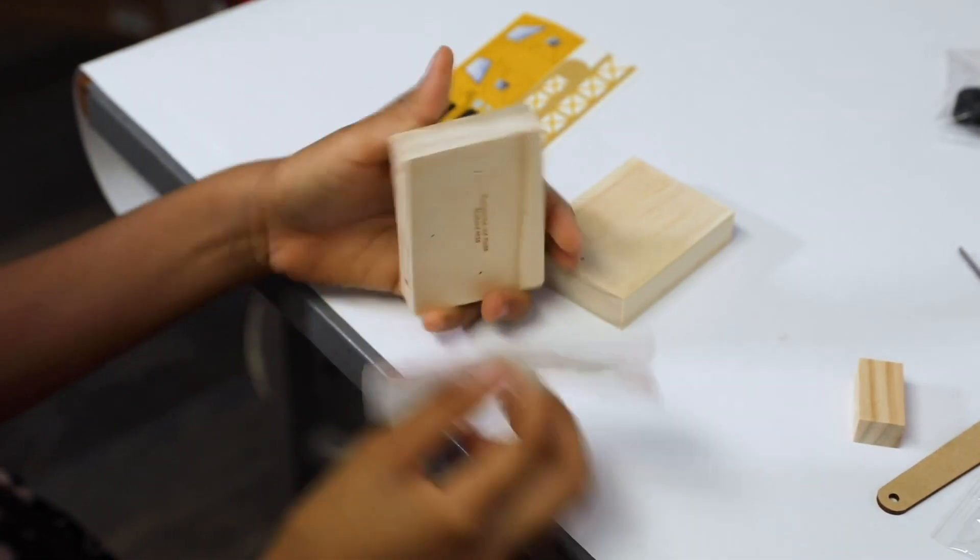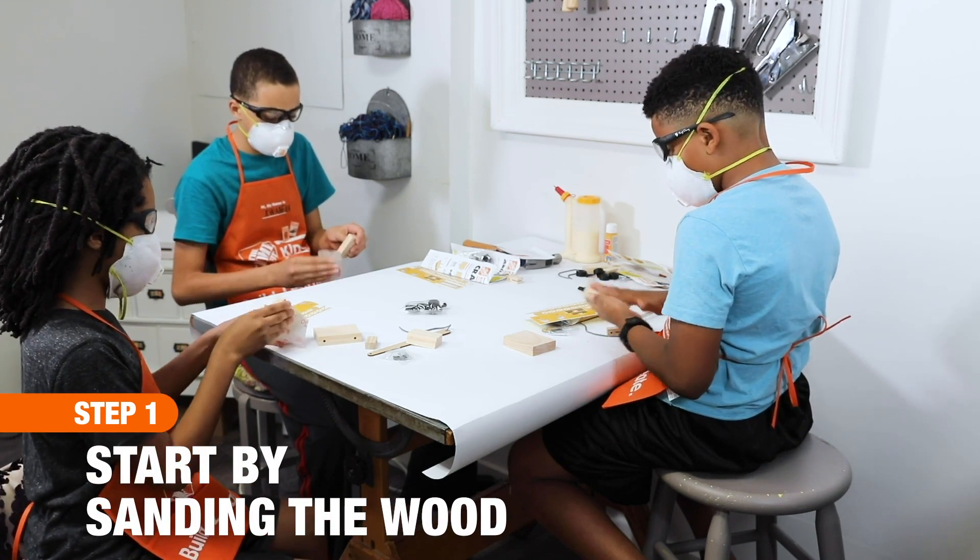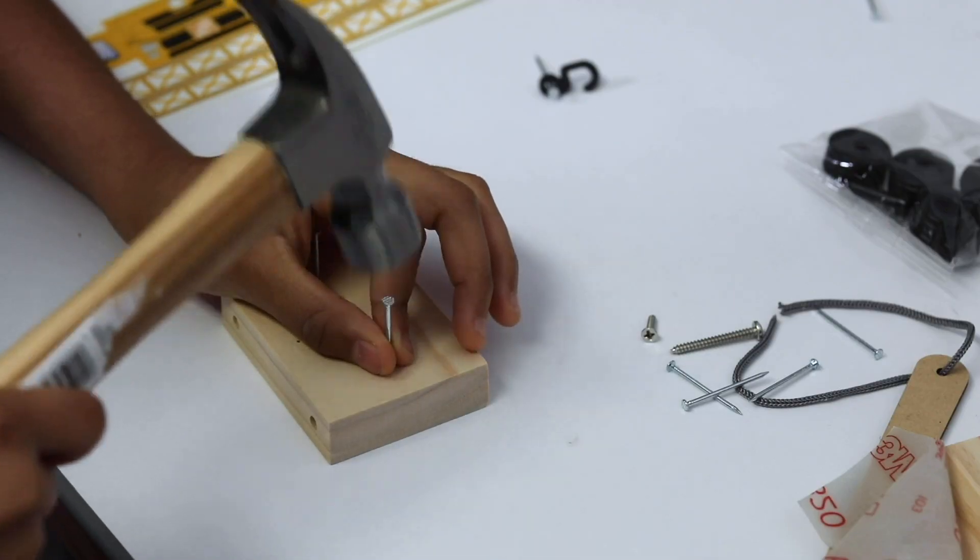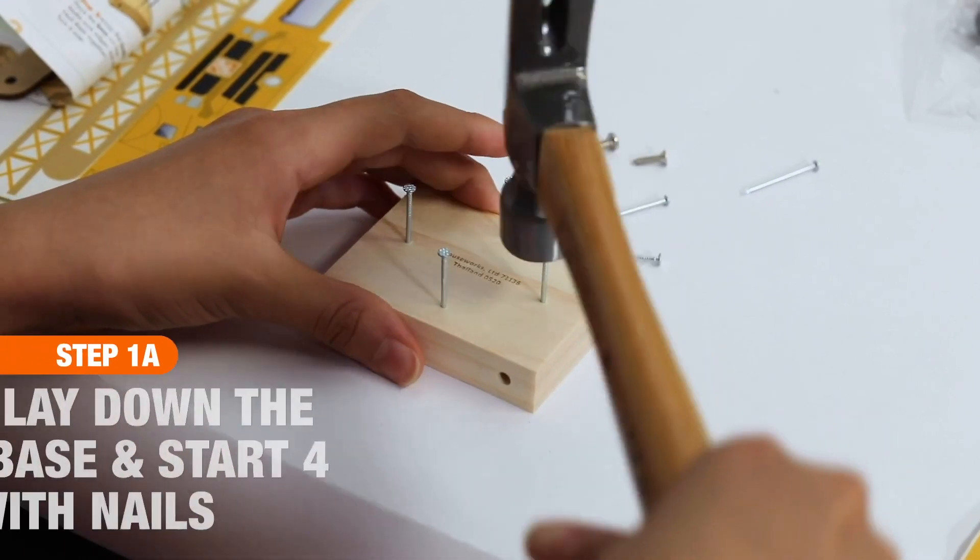Step one: take your fine sandpaper and remove any rough edges from the wood, sanding in the direction of the wood grain. Lay the base down and start with four nails. Now don't go all the way through, just get it started.